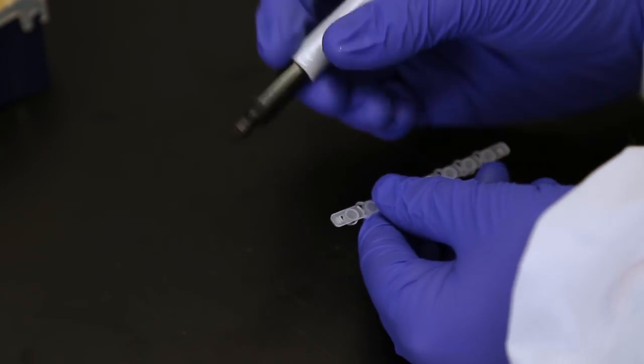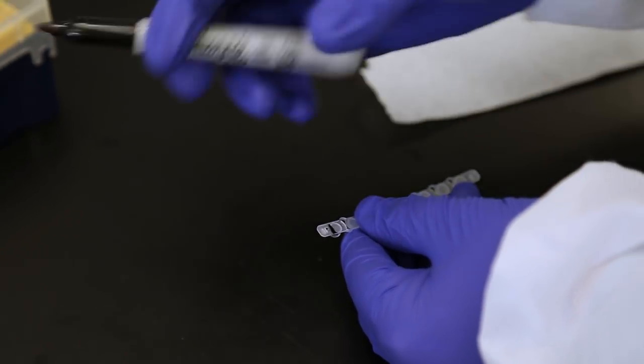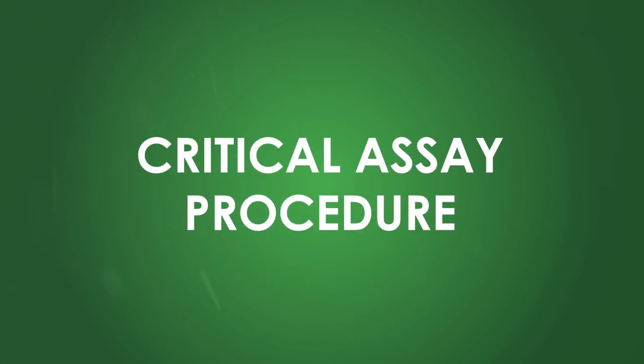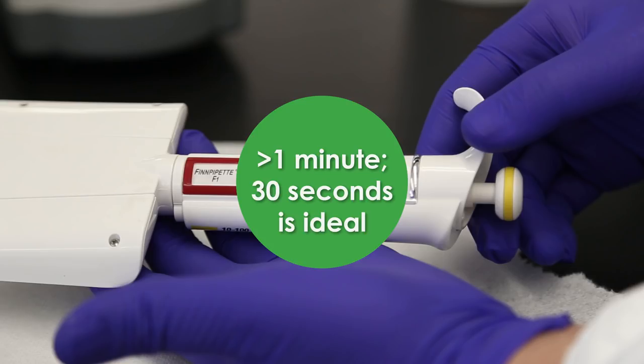To make sure you don't mix up the orientation of the tubes after vortexing, it's a good idea to mark the end that goes toward the first sample. Critical assay procedure. The next part of the procedure needs to be performed quickly in less than a minute and ideally within 30 seconds.